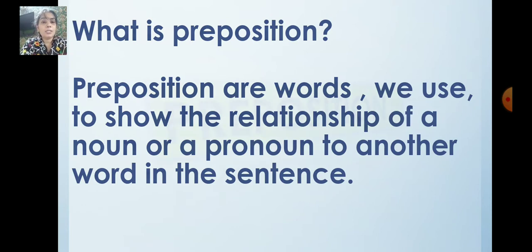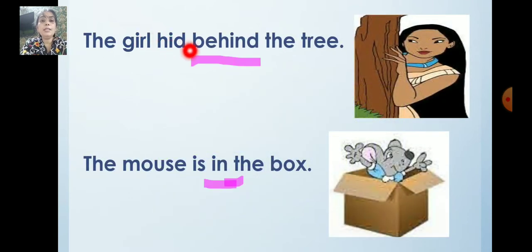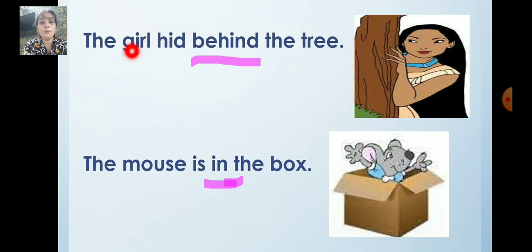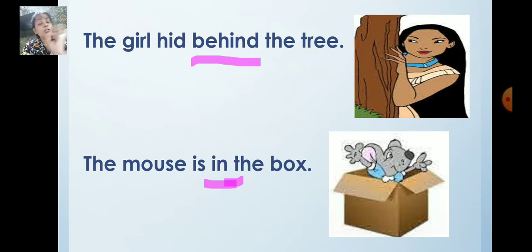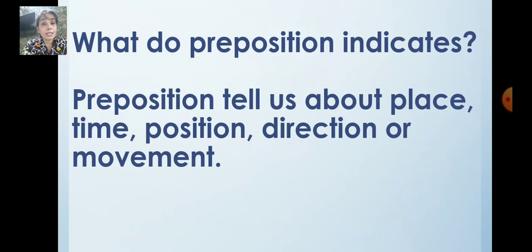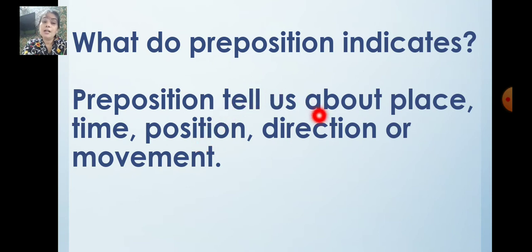And some other words in the sentence — see the example here. So the girl hid behind the tree. Girl is the noun and tree is also a noun. It shows the relation between them; the word in between is 'behind'. So where is the girl? She is behind the tree. So preposition is a word that shows the relation between the noun and the pronoun. Now what do prepositions indicate? It not only indicates the place or position. Preposition tells us about place, time, position, direction or movement.